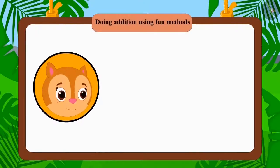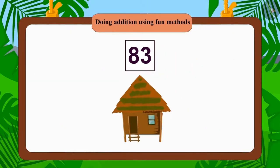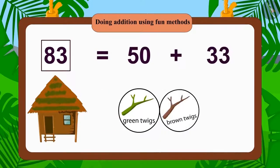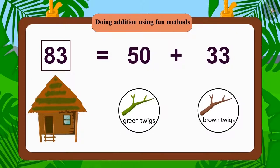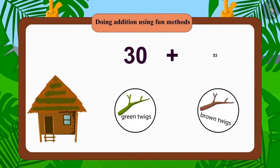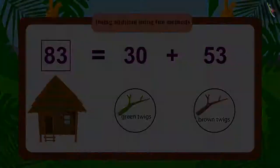Chanda collected 83 thin twigs for her house and built her own small house. She first used 50 green twigs and 33 brown twigs but Chanda did not like the design of the house. So she rebuilt her house using 30 green twigs and 53 brown twigs. So how many thin twigs did Chanda use this time? Chanda again used only 83 thin twigs.